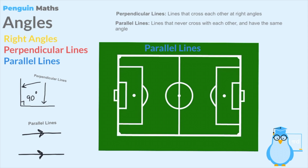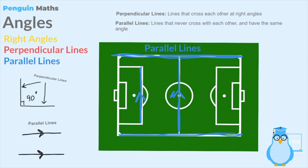Finally, let's look at where we can see parallel lines on the pitch. Parallel lines never cross each other and have the same angle. Taking one line, we know it will never cross the opposite line because they are perfectly in alignment and have the same angles. Another example of parallel lines would be the 18-yard line, which is parallel with the halfway line - they never cross each other. To mark this formally, we can draw small arrows between these two lines to indicate they are parallel.